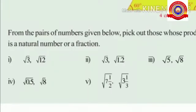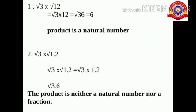In question number 4, we have to multiply both numbers and say whether the result is a natural number or a fraction. First: root 3 into root 12 equals root 36, so the result is 6 because 36 is a perfect square. The product is a natural number because 6 is a whole number.